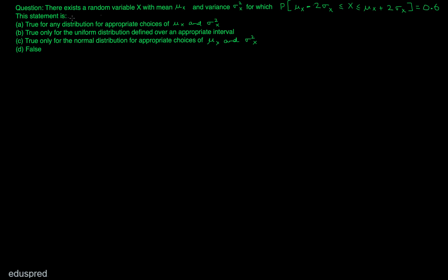This statement is — and these are the four options we are given. Now let's try to eliminate some of the options first. So first of all, I'm going to take a look at option C. Option C is saying that this statement is true only for the normal distribution for appropriate choices of μ and σ².